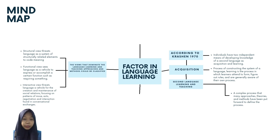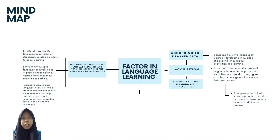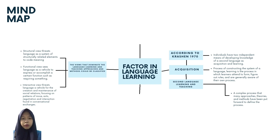I will explain about the views that dominate language learning and teaching. These views could be classified into three. First is the Structural View, which treats language as a system of structurally related elements to code meaning. The second is the Functional View, which sees language as a vehicle to express or accomplish a certain function, such as requesting something. The third is the Interactive View, which sees language as a vehicle for the creation and maintenance of social relations, focused on the patterns of moves, acts, negotiation, and interaction found in conversational exchange.